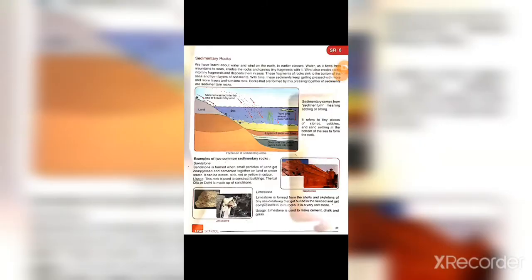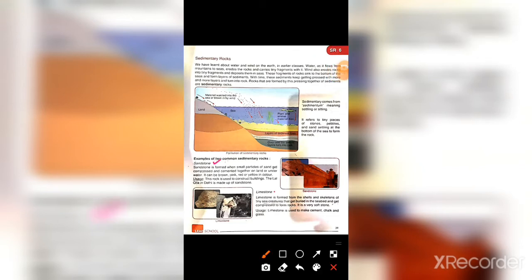Now you will open your student reader SR6. We will read about sandstone, limestone and their uses. Examples of two common sedimentary rocks are sandstone and limestone. Sandstone is formed when small particles of sand get compressed and cemented together on land or underwater.